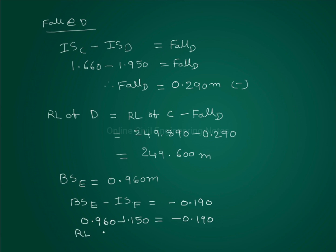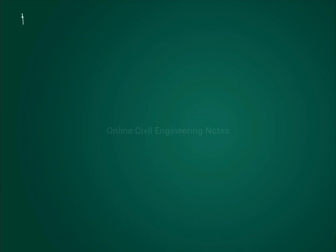RL of F is equal to RL of E minus fall at F. The fall at F is 0.190, so RL of F is equal to 249.320 minus 0.190, which equals 249.130 meters.